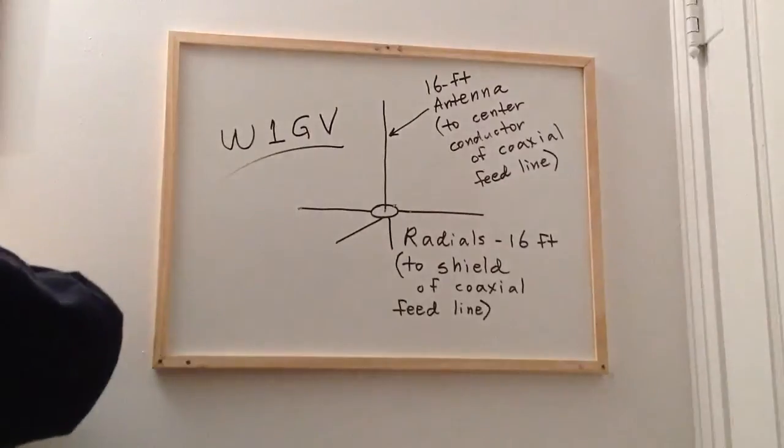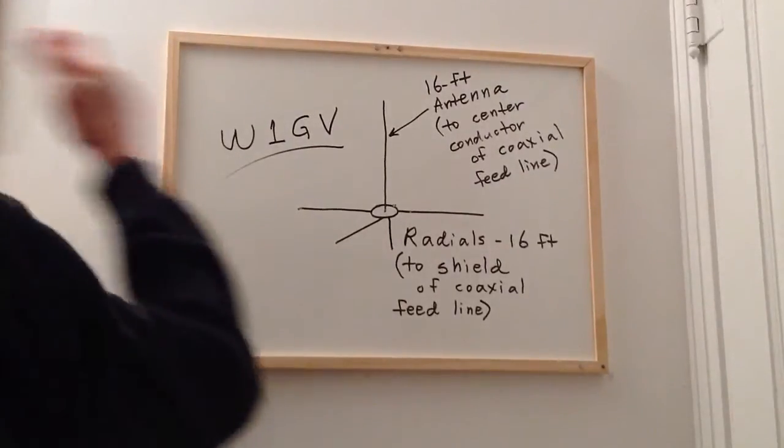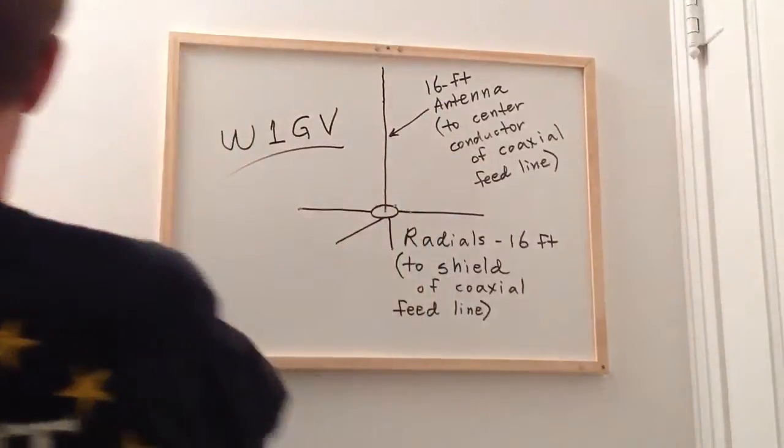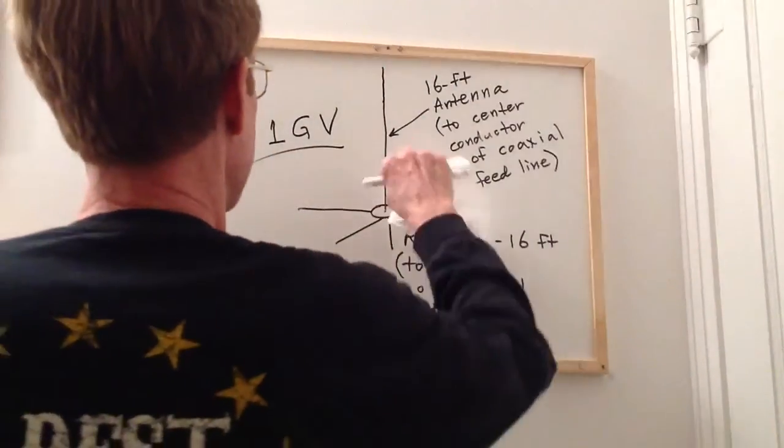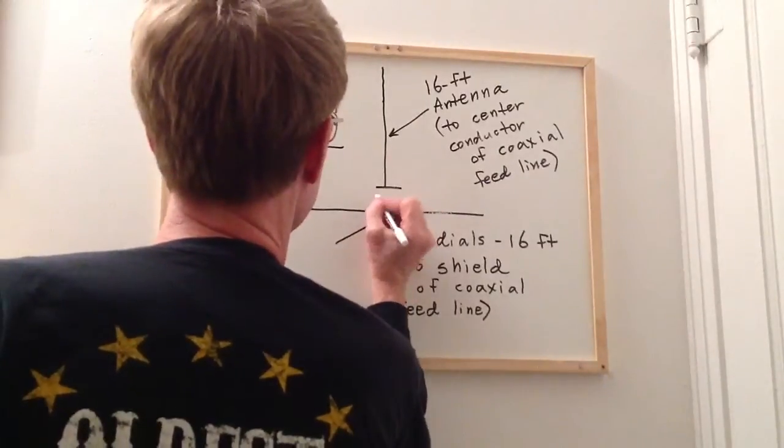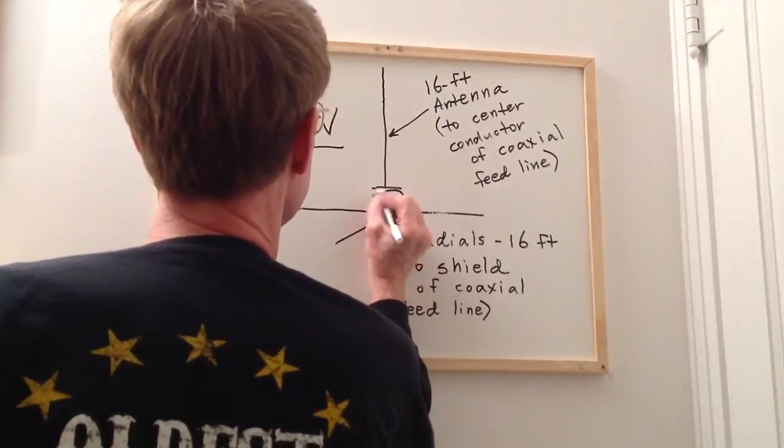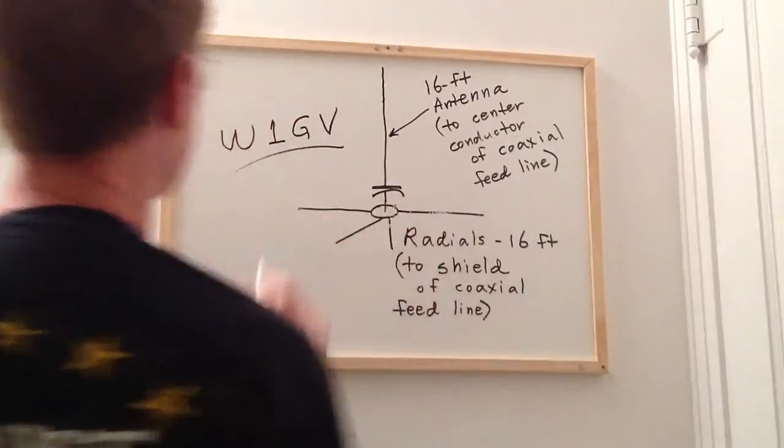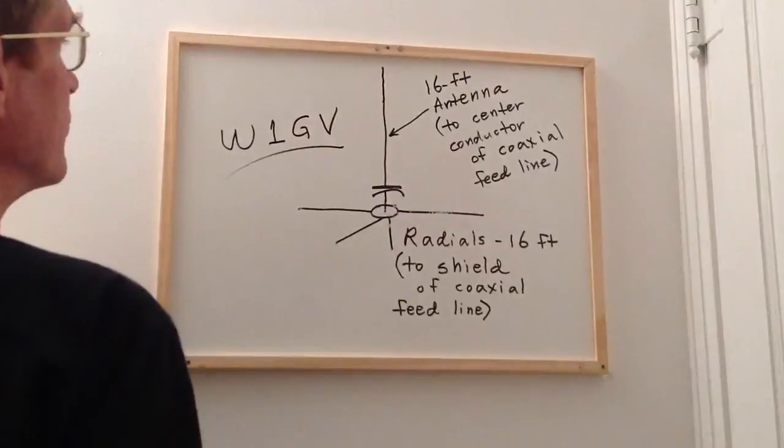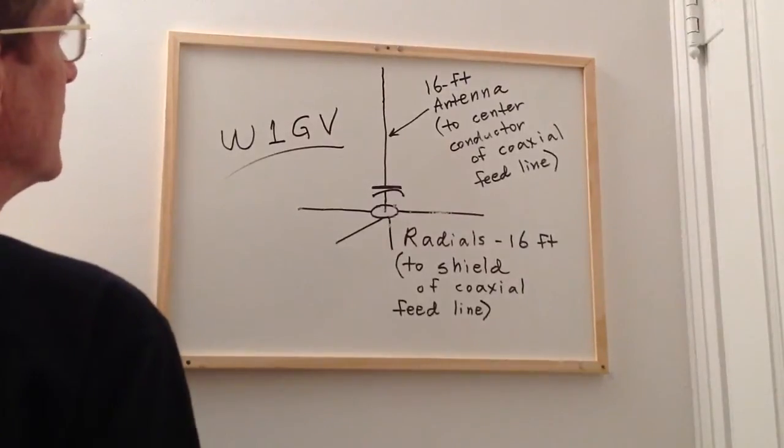And I thought that I could do that if I extended the length of this radiator somewhat, and then right at the base installed a capacitive reactance in the form of a capacitor which would compensate for the inductive reactance produced by making the radiator longer.